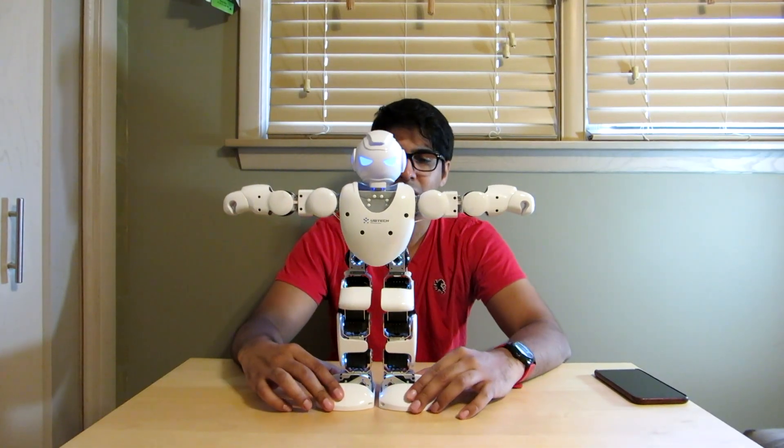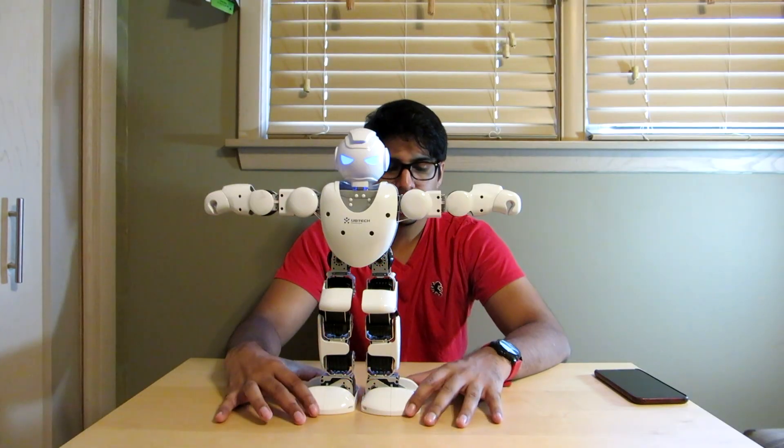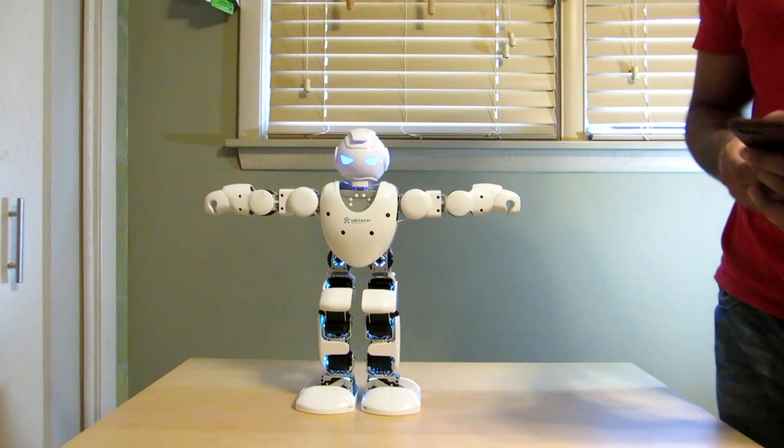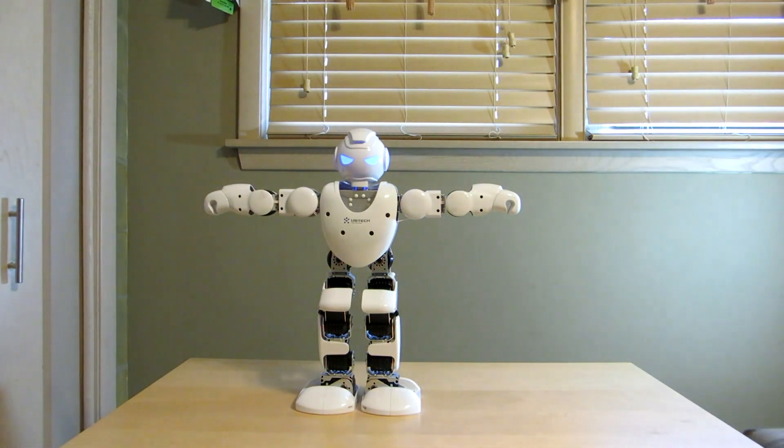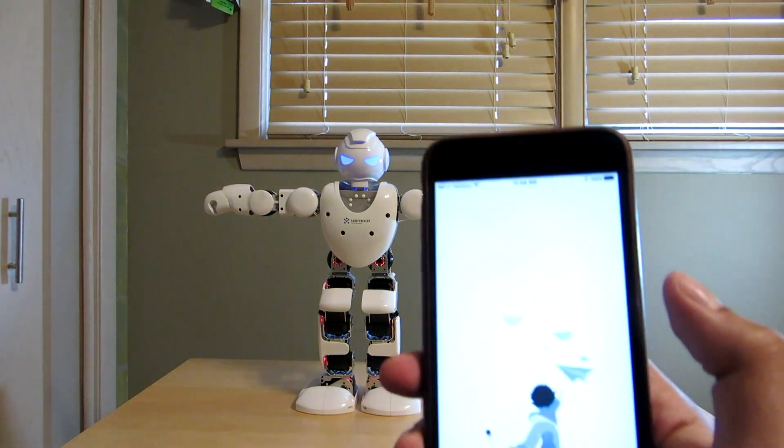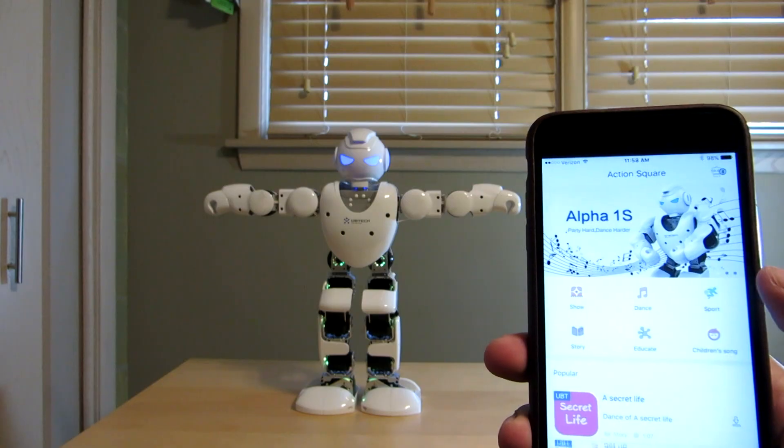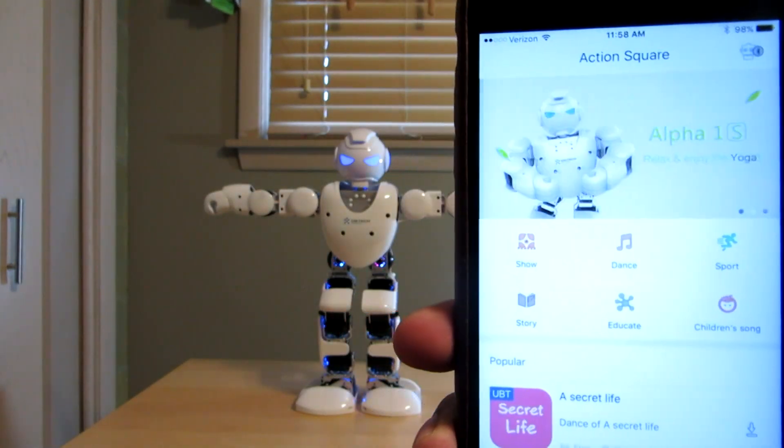I'm really curious to see what he does and how he performs. I'm going to go ahead and show you guys the app in the meantime while we get everything situated. So I downloaded it, it's called Alpha 1 App. Here's the app itself, it says robot, dream within reach, then this is the app showing the different things that Alpha 1S can do.